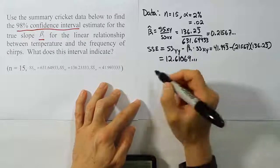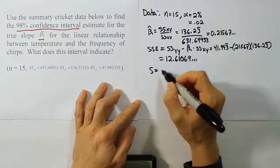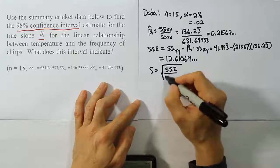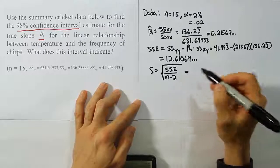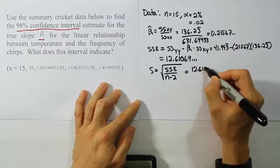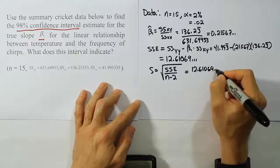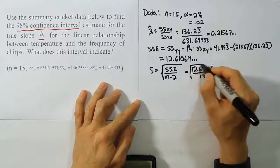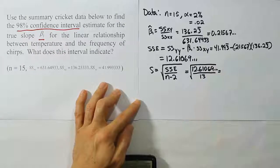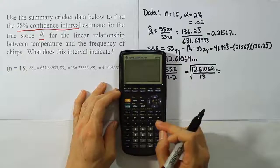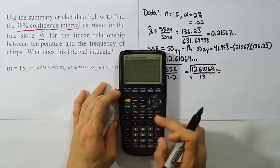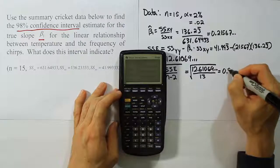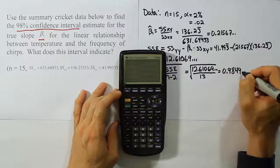Once we have the SSE, our next step is to determine S, which is the square root of SSE over N minus 2. SSE is 12.61069, divided by N minus 2, which is 13, then taking the square root. That gives us S = 0.9849.